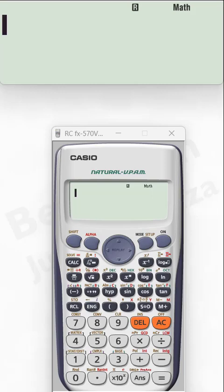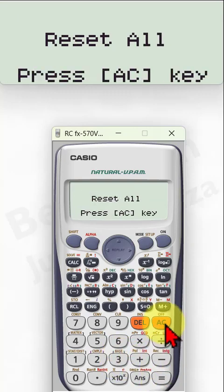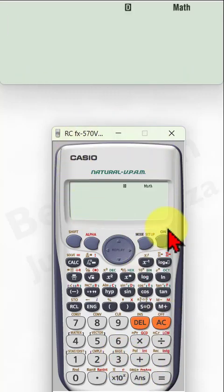A few tips and tricks using your scientific calculator. First thing, to clear any stored value in your calculator, press shift, 9, 3, equal, AC. Any value which was stored in the calculator is erased and your calculator is in default mode.